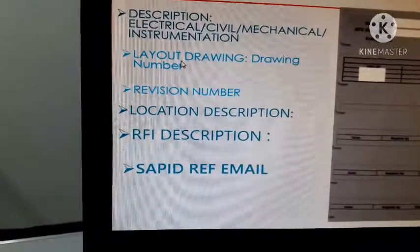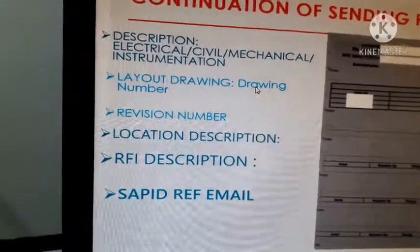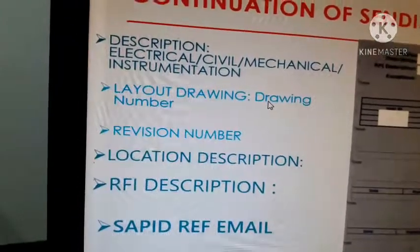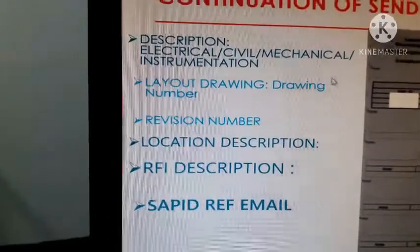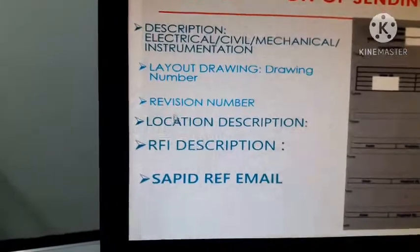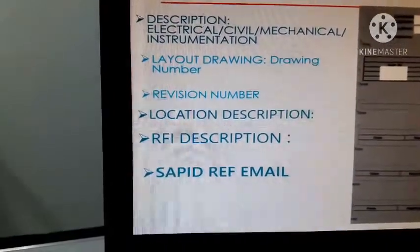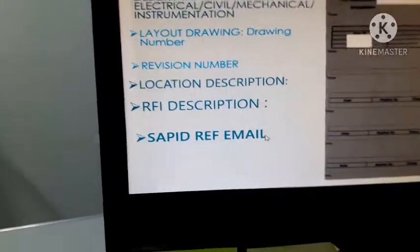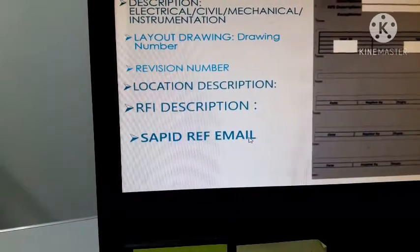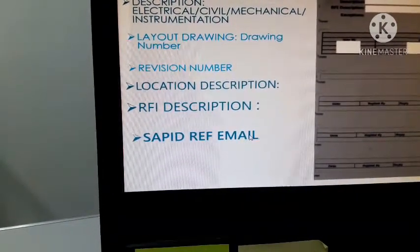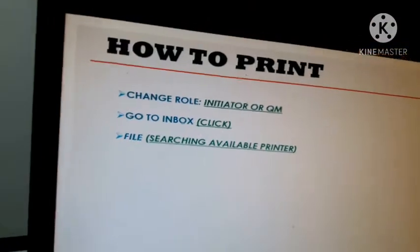Then go to the layout drawings — enter the drawing number that you are sending, because you need to attach it to your RFI inspection request. There is also a revision number — click that. Then enter the location description, RFI description, and SAPID. After that, go to the SAPID reference email to select to whom you want to send your RFI. After you complete all fields, proceed to print.